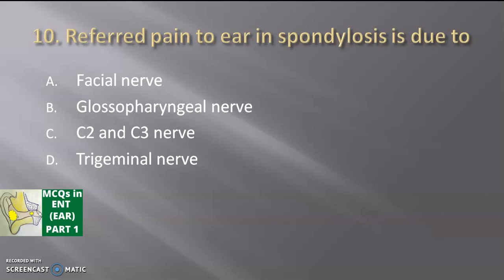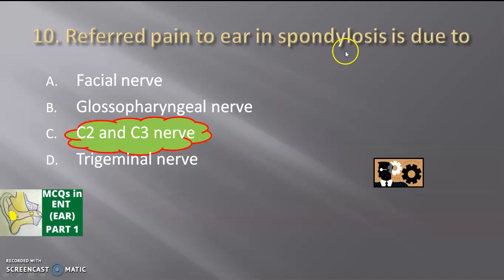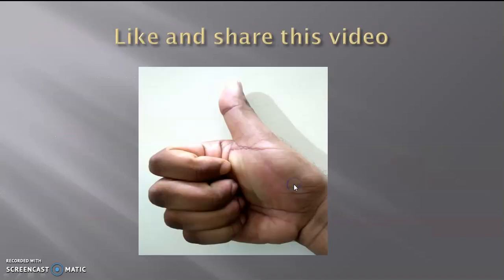Last MCQ: referred pain to the ear in spondylosis is due to — facial nerve, glossopharyngeal nerve, C2 and C3 nerve, or trigeminal nerve? The answer is C2 and C3. Spondylosis is inflammation of the cervical spine. C2 and C3 nerves get compressed and supply the ear via the greater auricular nerve. So the patient has referred pain to the ear while the problem is in the neck — that is why it is called referred pain to the ear.